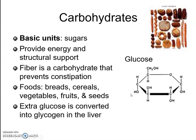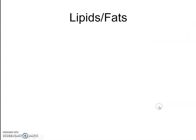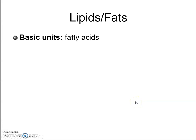Glucose has a structural formula — it's a ring structure composed of carbon, hydrogen, and oxygen. Lipids and fats have fatty acids as their basic units.